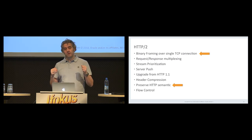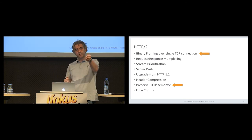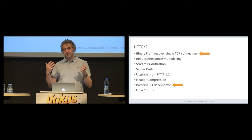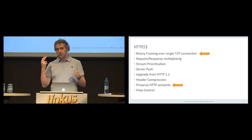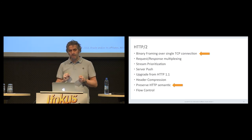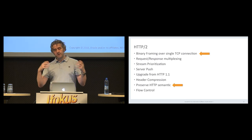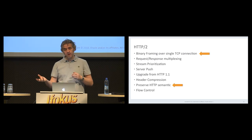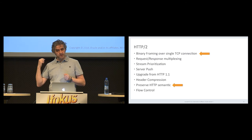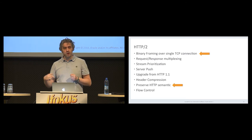In HTTP/1.1, if you need to render a page that needs 100 resources, your client will have to open something like 50 physical connections, and on those connections the client can do like two HTTP requests each — so to render one page with 100 resources, the client opens roughly 50 physical connections, which is very expensive on both client and server side. In HTTP/2, everything happens over one single TCP socket — one connection — over which the client can open multiple logical connections called streams. So it's way more efficient.